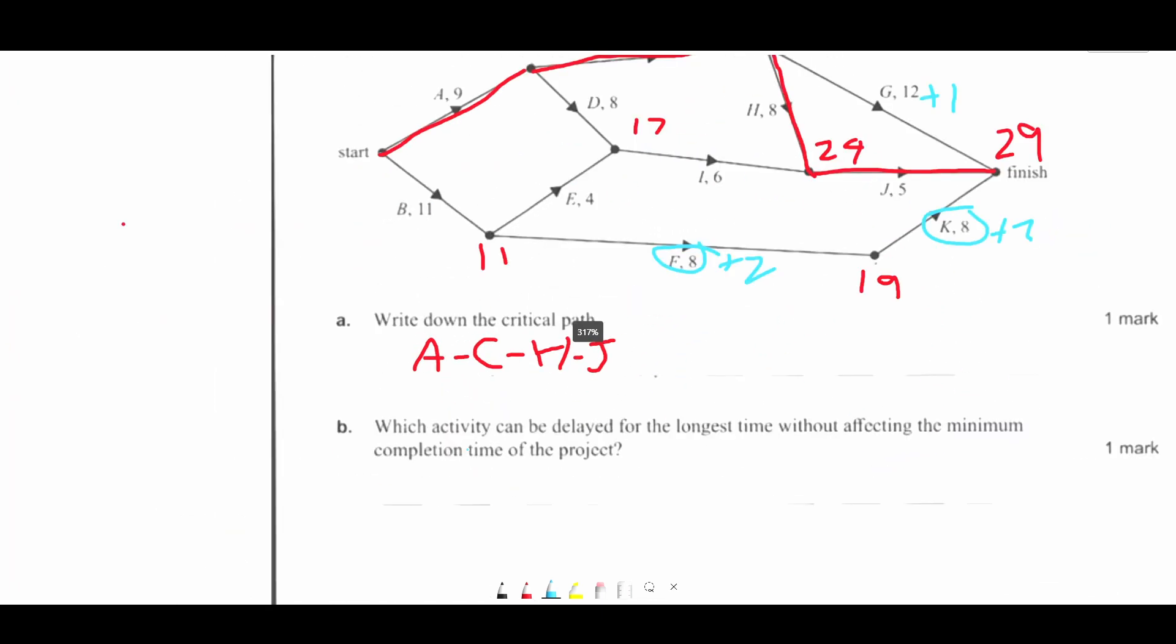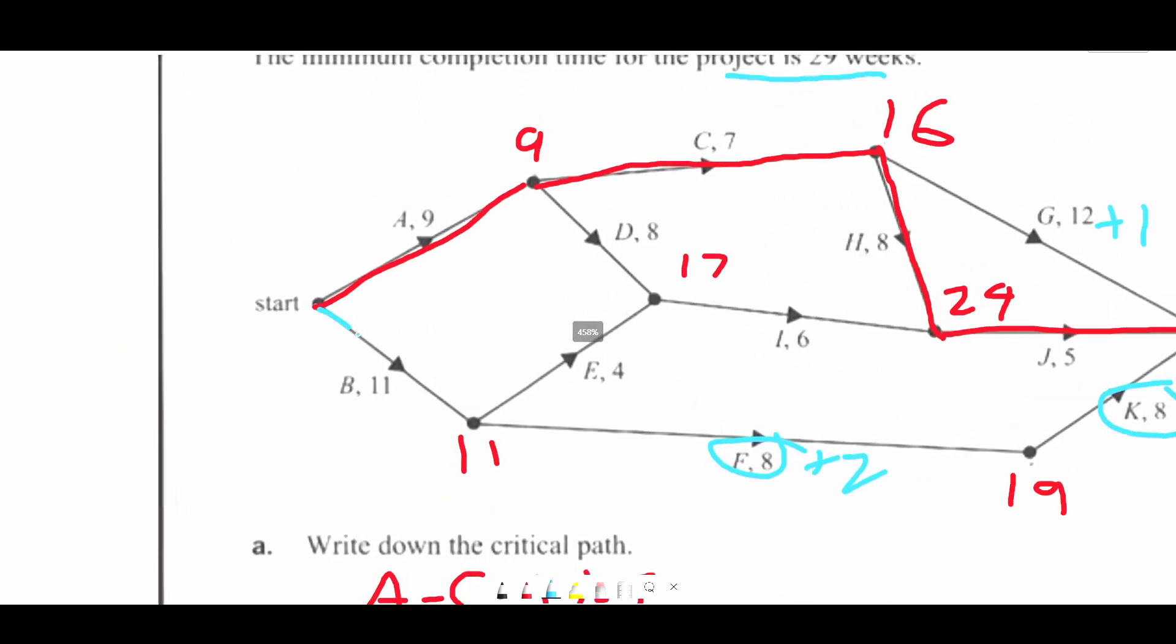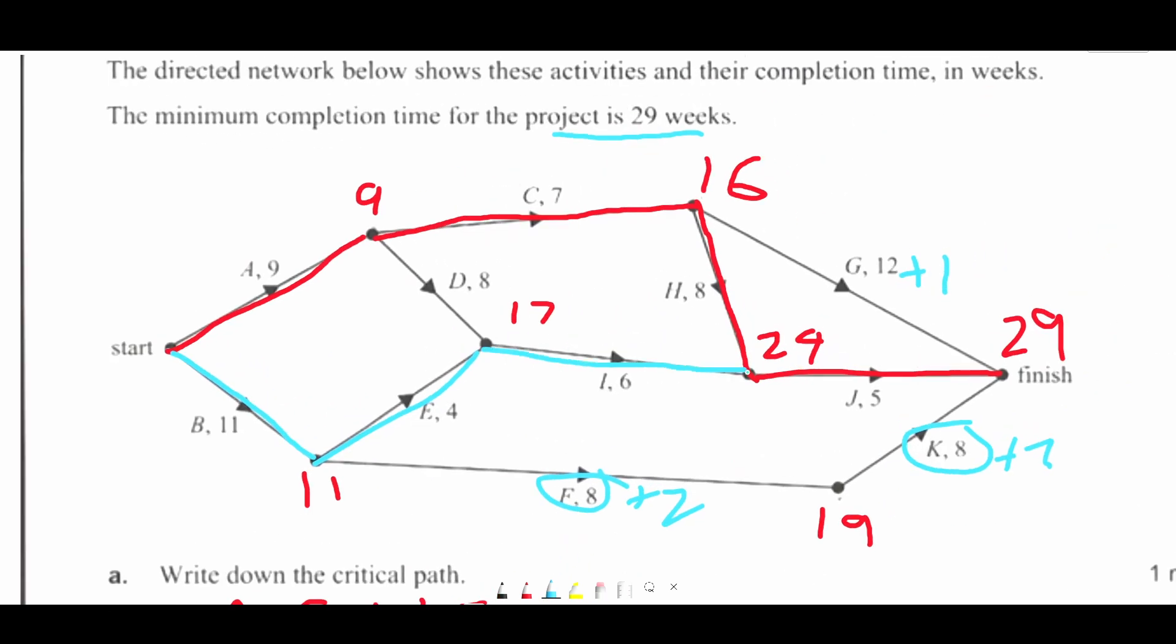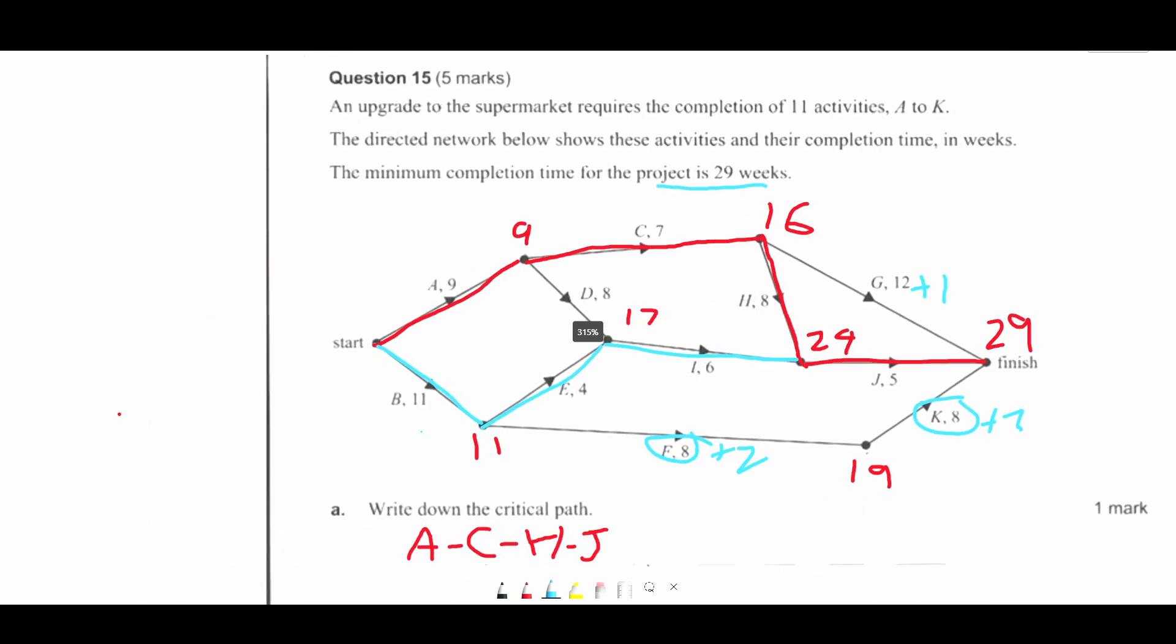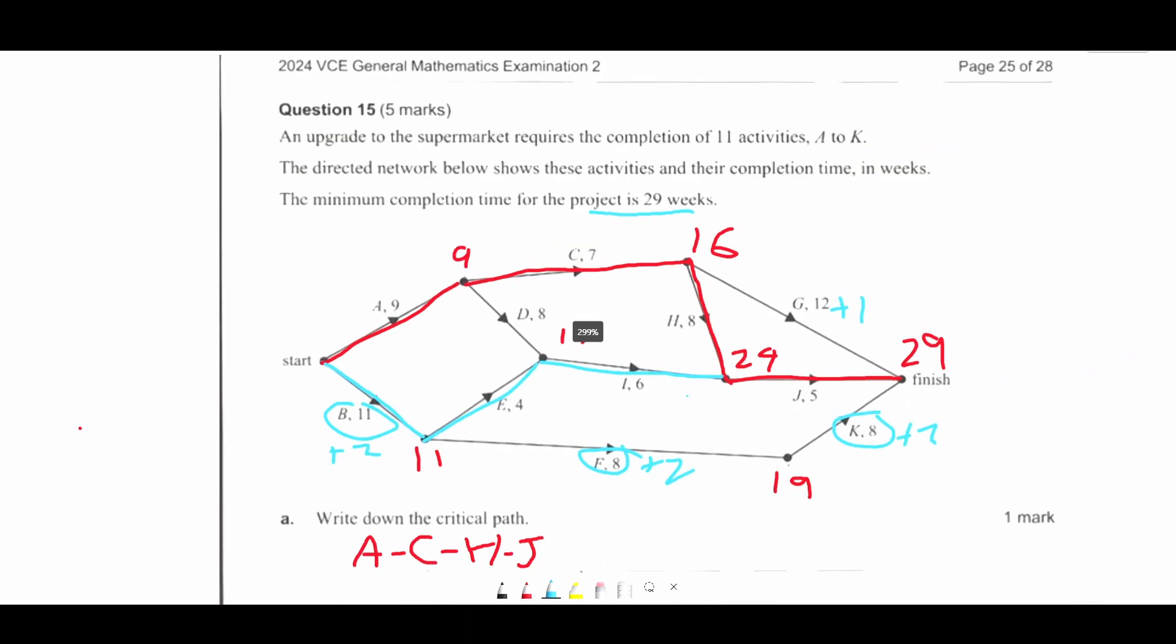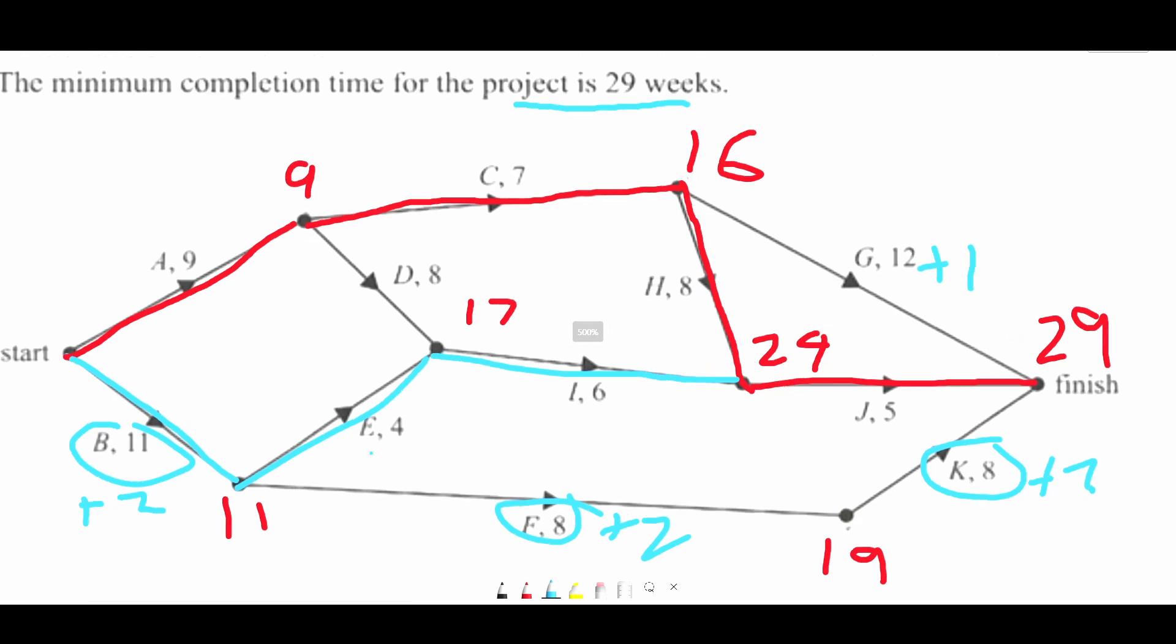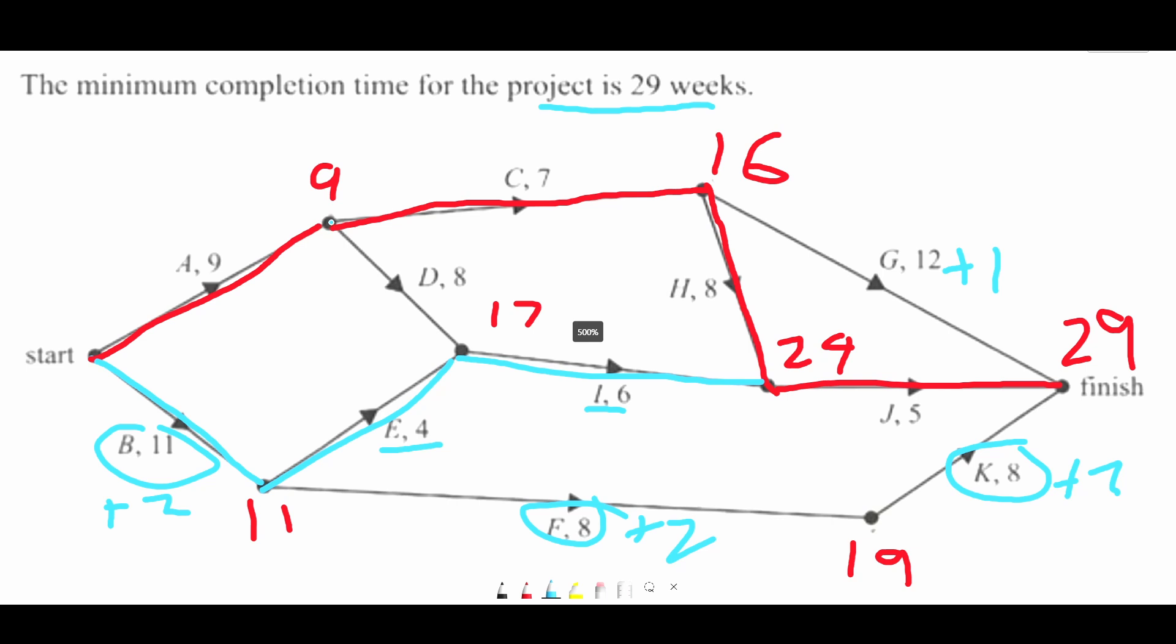But the question is saying which activity, not which activities. So it can't be those two. B down here is 11, 15. 15 plus 6 plus 5. That equals 26. So we also know that this can also be increased by plus 2. But when we're going down here, one of these activities can be increased by plus 3. It's either this one or this one. So 11 plus 4 is 15.